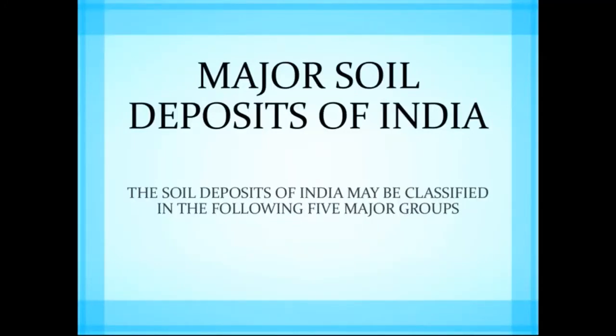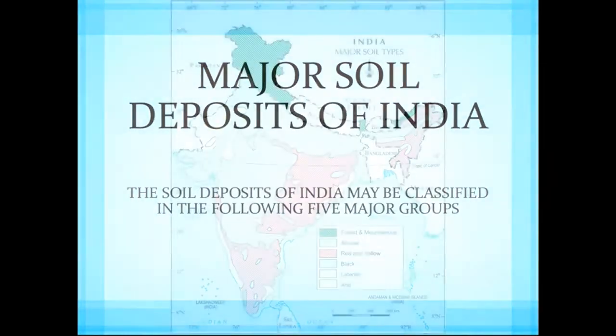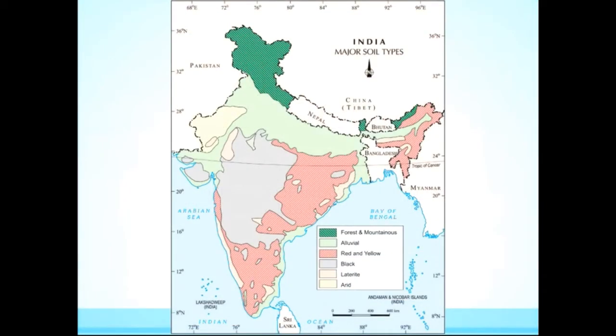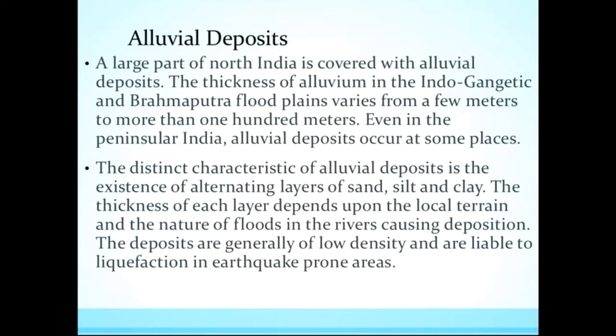The soil deposits of India may be classified into five major groups. Alluvial deposits are the first group. A large part of North India is covered with alluvial deposits. The thickness of alluvium in the Indo-Gangetic and Brahmaputra floodplain varies from a few meters to more than 100 meters.